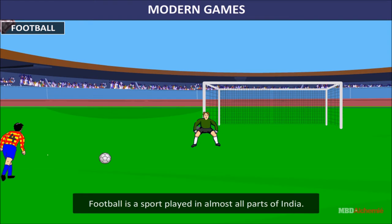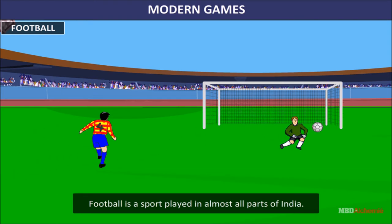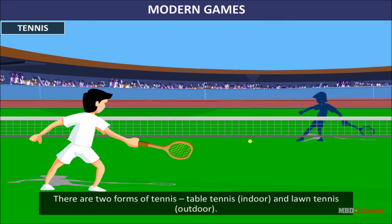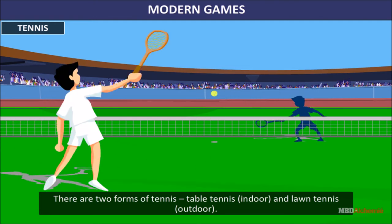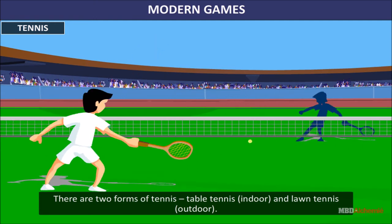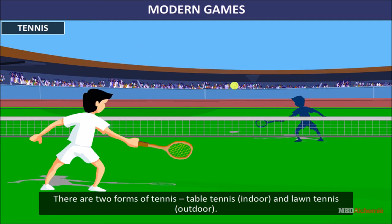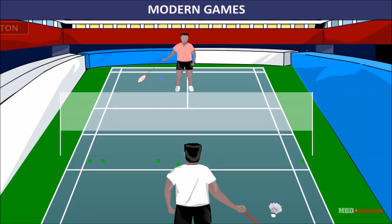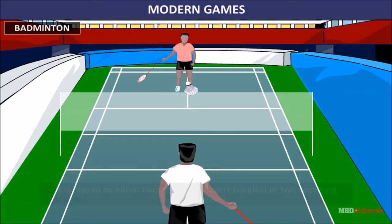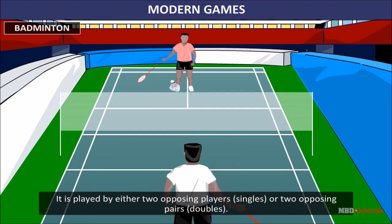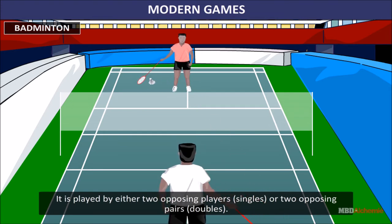Football is a sport played in almost all parts of the world. Tennis has two forms: Table Tennis, which is played indoors, and Lawn Tennis, which is played outdoors. Badminton is played by either two opposing players — singles — or two opposing pairs — doubles.